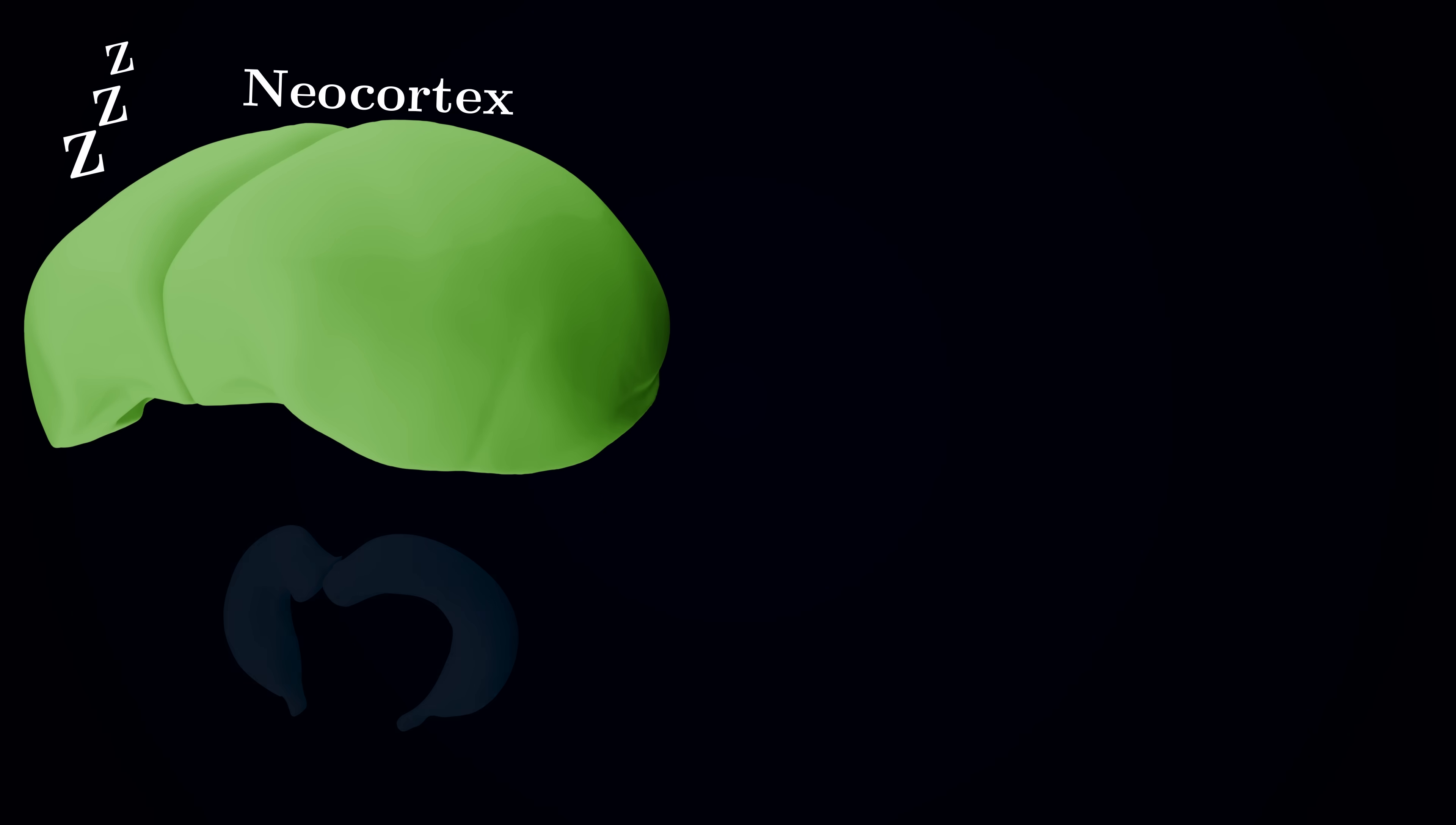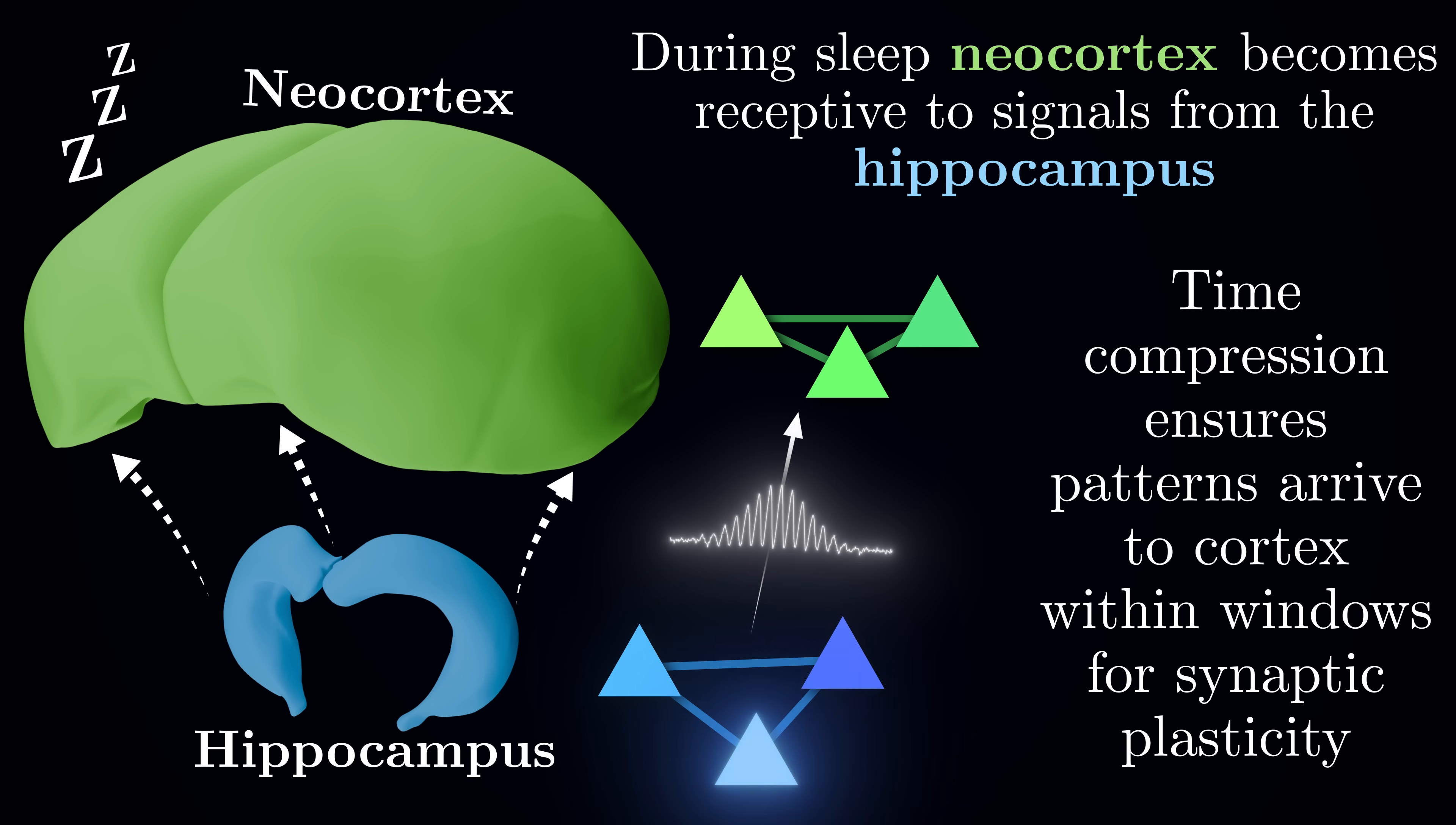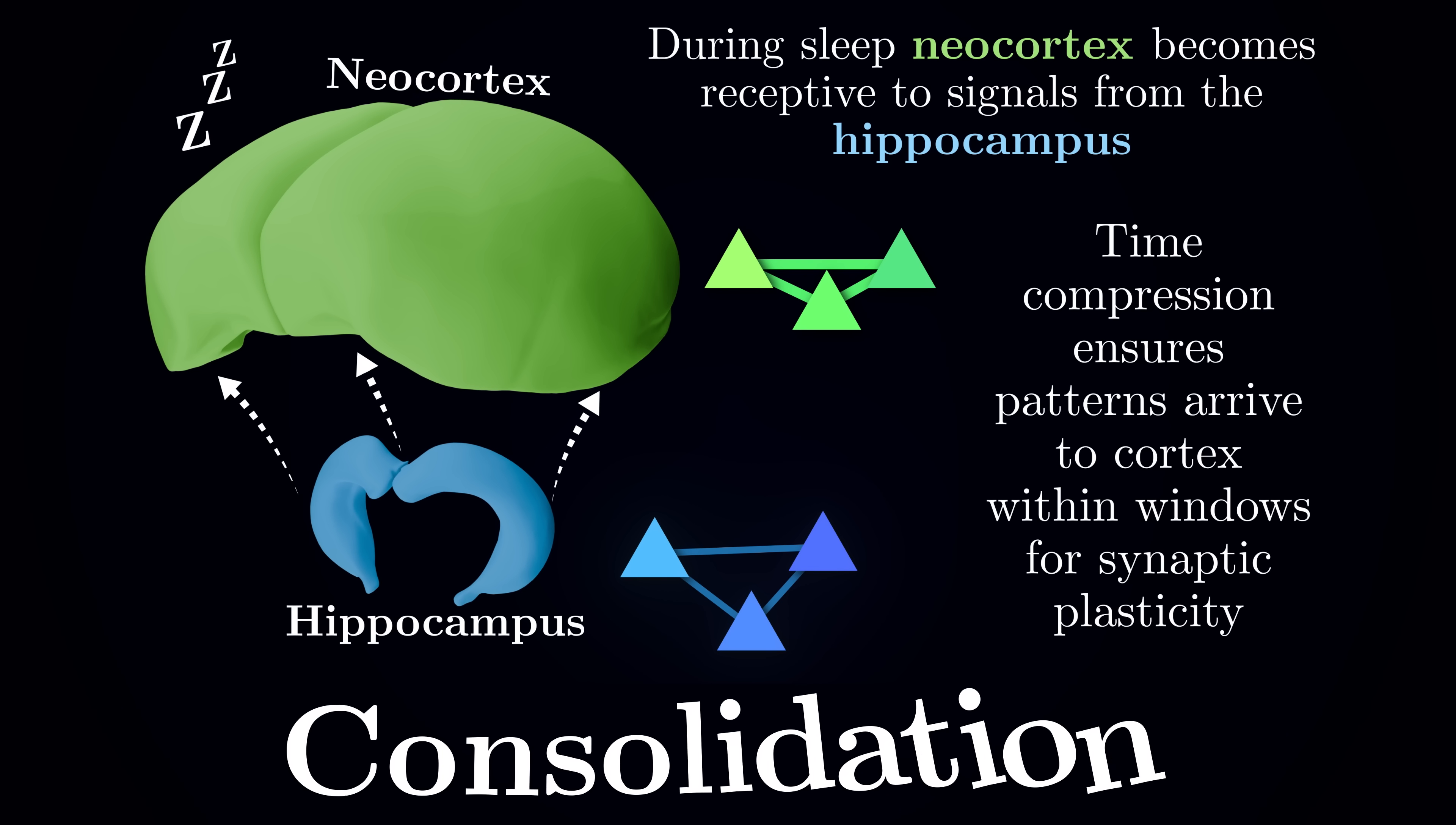The compressed timing of these replays ensures that neural activity arrives in precise temporal windows, perfectly timed to strengthen connections between neurons in the neocortex. Through this process, patterns encoding important events get repeatedly reactivated, compressed, and transferred into the cortex for permanent storage – a process known as consolidation.